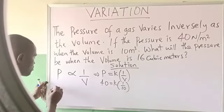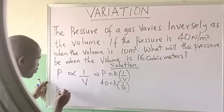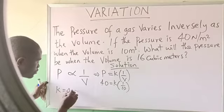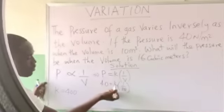k times 1 will give me k. 40 times 10 will give me what? 400. That means you have to make k the subject of formula.